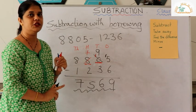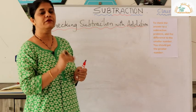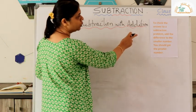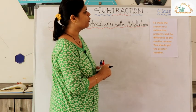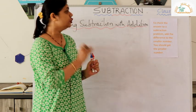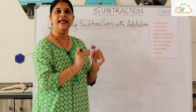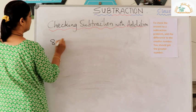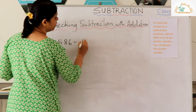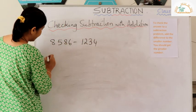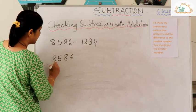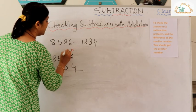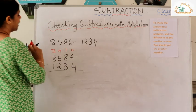Now that you know how to subtract, you can check if your answer is correct using addition. The rule is: to check the answer to a subtraction problem, add the difference to the smaller number — you should get the greater number. Let us see this with an example: 8586 minus 1234. Write the greater number on top, the smaller number below.